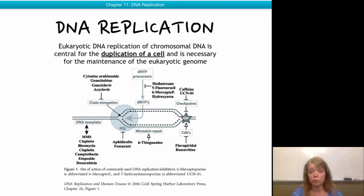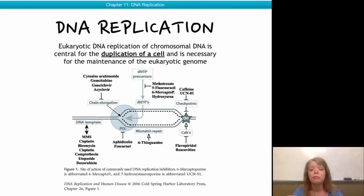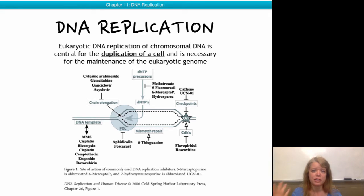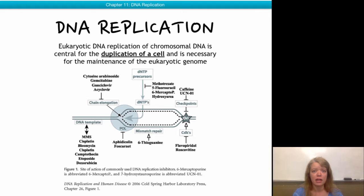You don't need to memorize the names of these drugs — I will not ask you — but so you can appreciate the importance, here is the basic representation of a DNA replication fork, with the big blue blob being the polymerase, and the many drugs that have been designed against the various steps of DNA replication.